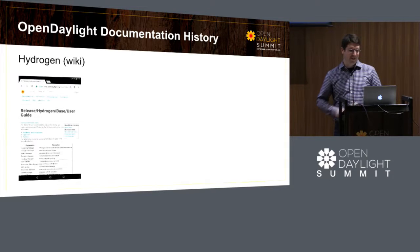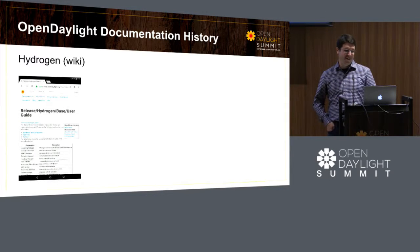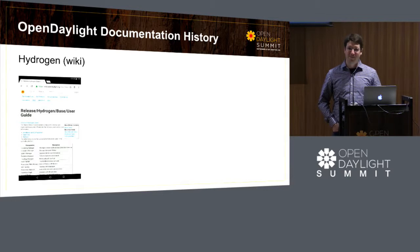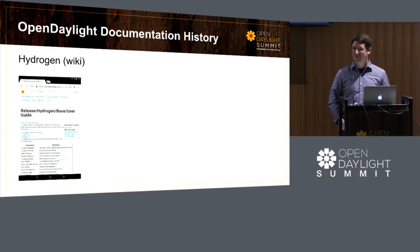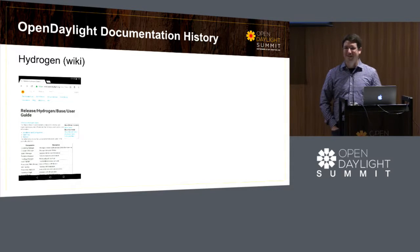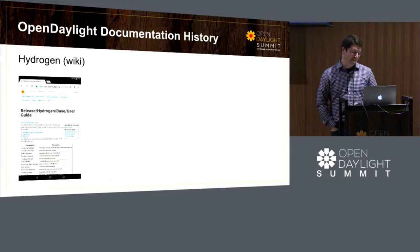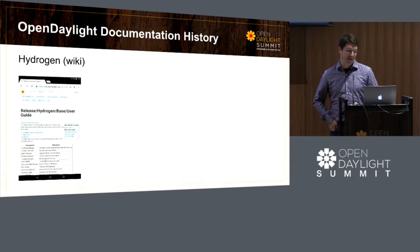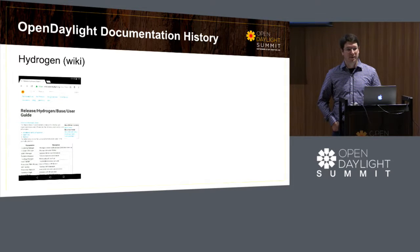Open Daylight History. For Hydrogen, we literally had a wiki page — the Hydrogen base user guide. We had distributions: a base, a service provider, and a network virtualization or something like that. By the way, that was a terrible idea and nobody used them. We fixed that. But it was literally just a skeleton that pointed to other wiki documents that were probably out of date before Hydrogen was even started.